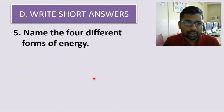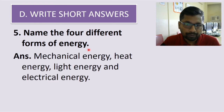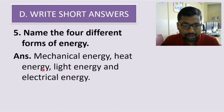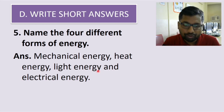Fifth question: name the four different forms of energy. The four forms are mechanical energy, heat energy, light energy, and electrical energy. These are the different forms of energy.